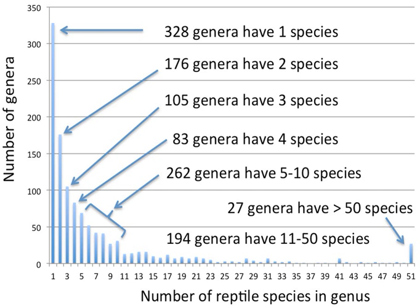In binomial nomenclature, the genus name forms the first part of the binomial species name for each species within the genus. For example, Panthera leo and Panthera onca are two species within the genus Panthera. Panthera is a genus within the family Felidae.